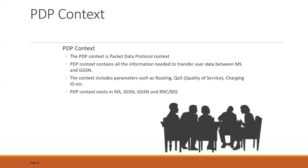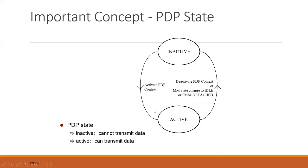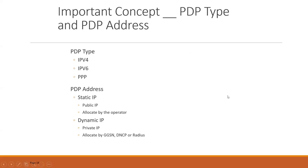The PDP context contains all the information needed to transfer user data. Once your PDP context is created, you are able to perform uplink and downlink. During PDP creation you are provided routing information, quality of service, charging ID, IP address, and other information. The PDP context exists in your MS, SGSN, GGSN, RNC, and BSS. There are two states: active PDP and inactive PDP. In inactive state you cannot transmit data — you must activate your PDP.